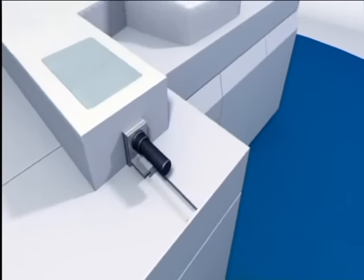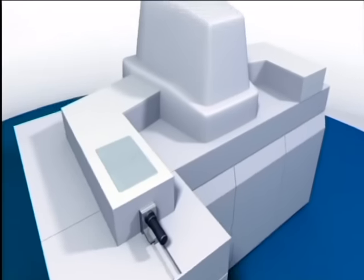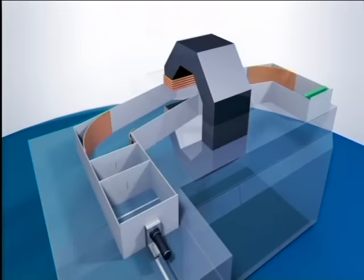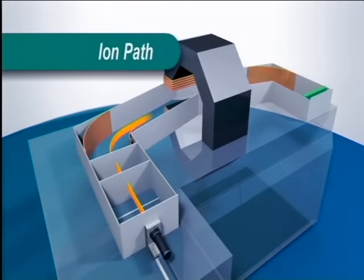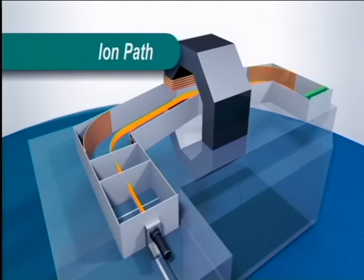The positive ion beam passes between two charged curved plates, which deflect it in a curve so that it enters the area here, where an electromagnet produces a vertical magnetic field. This further deflects the beam in an arc of a circle. On emerging from the magnetic field, the beam is deflected again by another set of charged plates, which direct it into the detector.